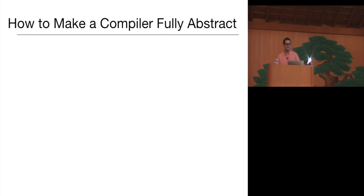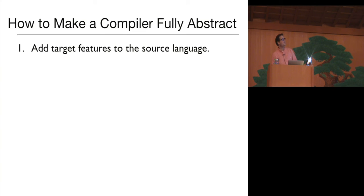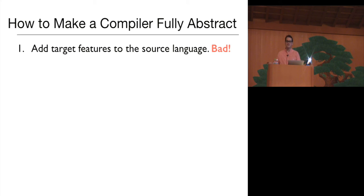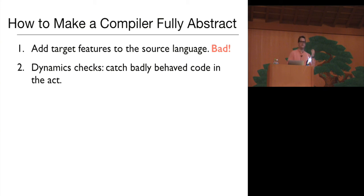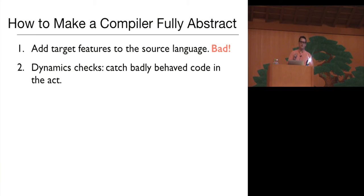So that's the bad news. Where do we go from there? How do we actually make one of these fully abstract compilers? The first way, which always works, is to just add the target features to the source language — but this is a no-go because we actually like the security and modularity features of our source language. The second way is to dynamically enforce this interface: in the target language, monitor a target context as it interacts with the source, and raise an error if it tries to interact in a way not available in the source language.